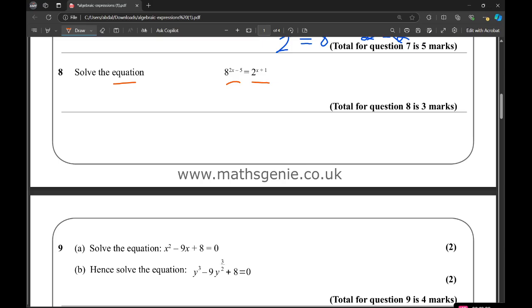Step 1 here: write it as a power of 2. Well, 8 equals 2 cubed. So you have 2 cubed all to the power of 2x minus 5, equals 2 to the x plus 1. There's a power to a power, so we multiply the powers together. So 3 times all this, that'll be 6x minus 15. So we can write it as 2 to the power of 6x minus 15.